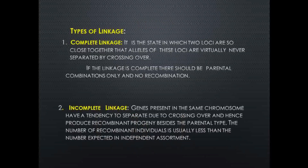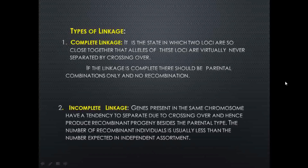The first type of linkage is complete linkage. It is the state in which two loci are so close together that alleles of these loci are virtually never separated by crossing over. Even though the chromosomes undergo crossing over, the genes do not separate. In complete linkage, there should be parental combinations only and no recombinations.